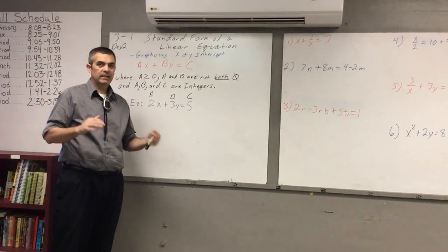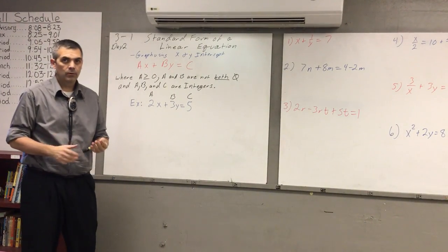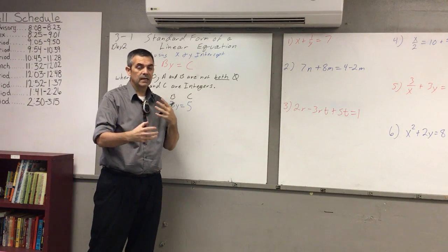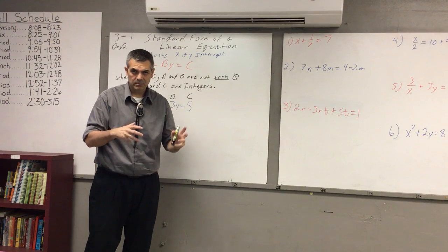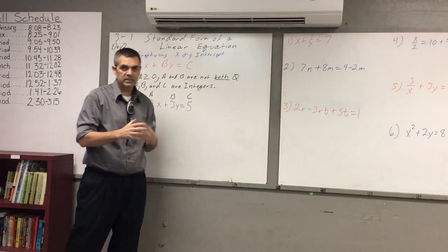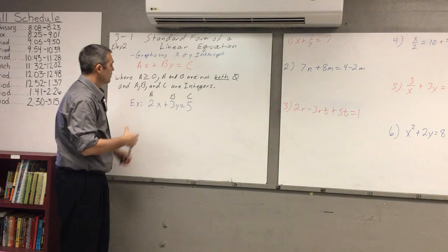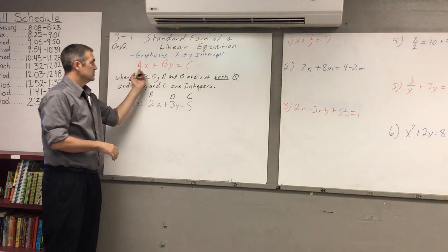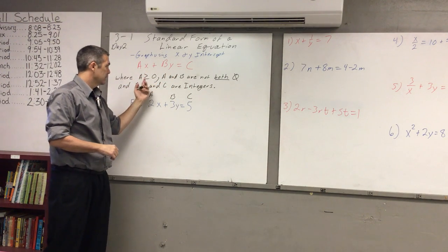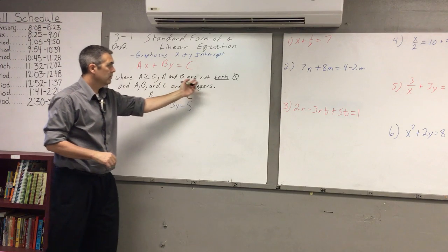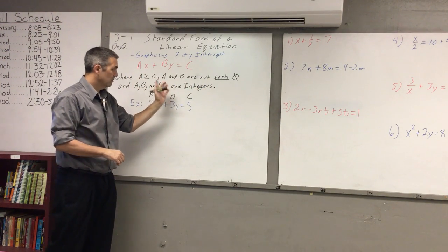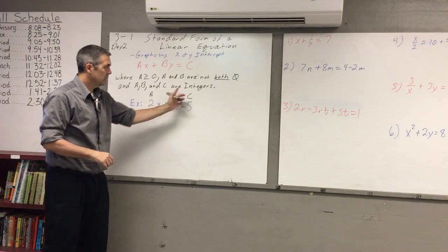Today is day two of standard form. We're going to cover identifying something that can be put into standard form versus something that can't, and then we're going to talk about graphing using the x and y intercepts. Remember, standard form is ax plus by equals c, where a is greater than or equal to zero, a and b are not both zero, and a, b, and c are integers.